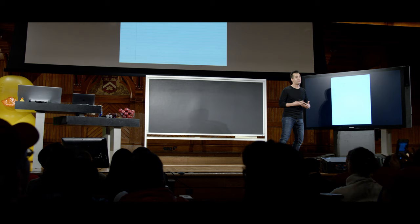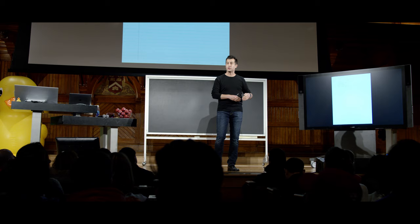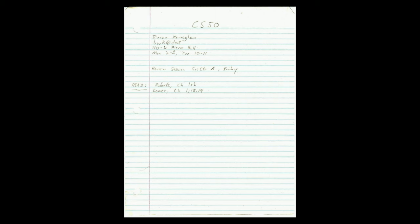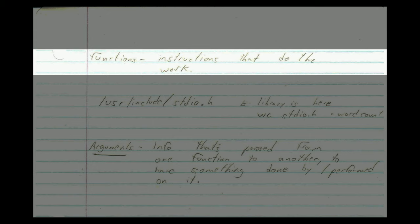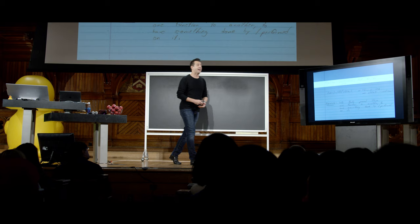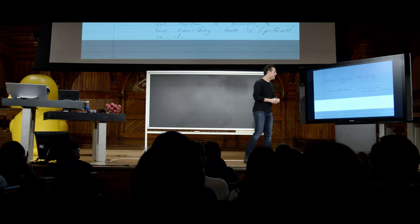In thinking about what we hope your takeaways are from the course and computer science more generally, I actually pulled up some of my own notes. You might recall from week zero that I took this course myself back in 1996 — it happened to be the one that turned me from a government major to a computer science major. My second page of notes from back then noted that a function is instructions that do the work, and arguments are info that's passed from one function to another to have something done by or performed on it.